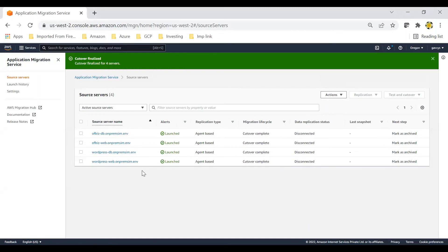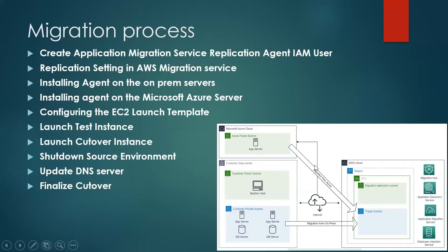These instances will be marked as archived and data replication has been disconnected. The next step is to shut down the on-premises servers and change the DNS settings. Reviewing the steps: created IAM user, set replication settings, installed agent on premises, configured EC2 instances, launched test instance, performed cutover. Now: shut down source servers, update DNS, and finalize the cutover. We have migrated all these servers to the target subnet.